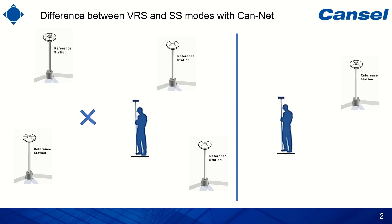A second mode available within CANNET is called the SS mode, or Single Station mode. In that mode, the user will be connected to the nearest CANNET base station, which will be used as their own base station.